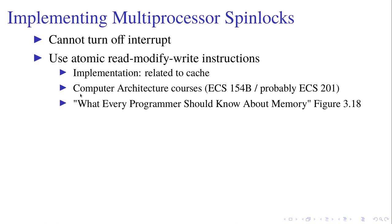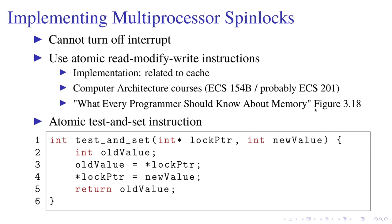You can learn it in computer architecture classes like CS154B or properly 201 here at UC Davis, or you can learn something about it in a paper written by someone in the FreeBSD team. The instruction we are going to use is called the atomic test-and-set instruction. You have a pointer, you read it into the old value, set it to the new value, and then return the old value to the user.